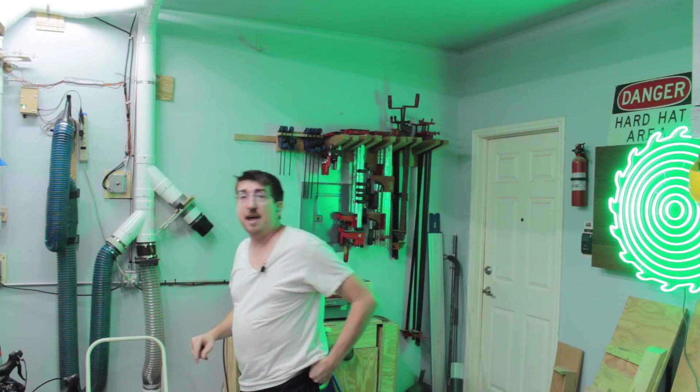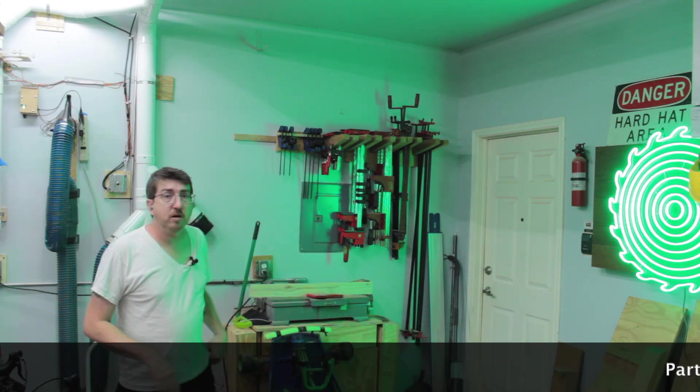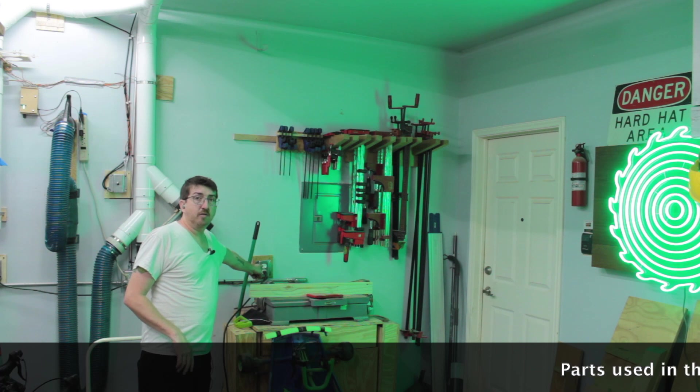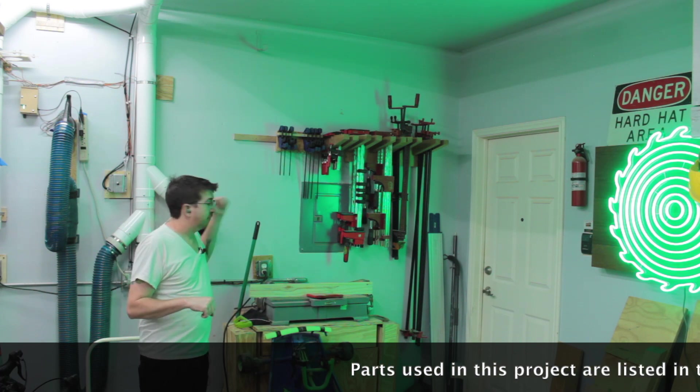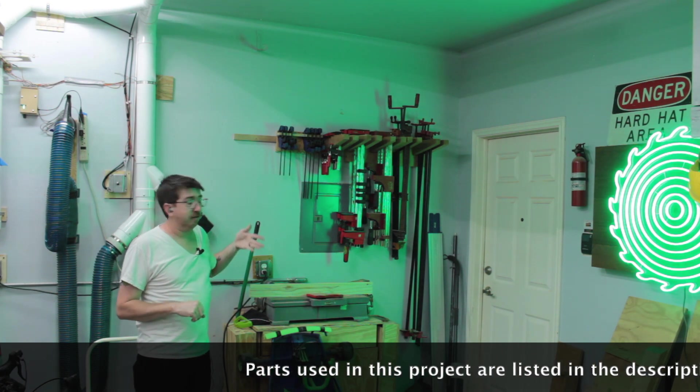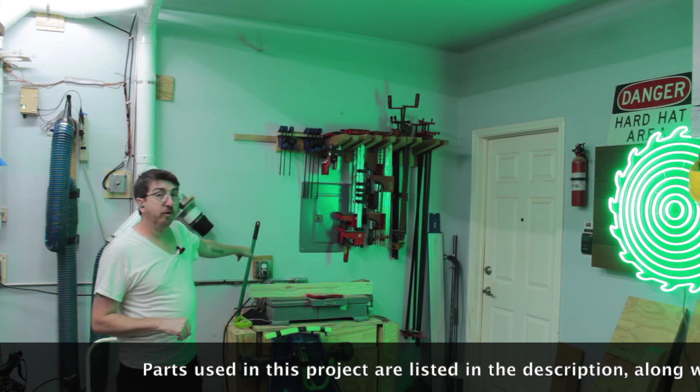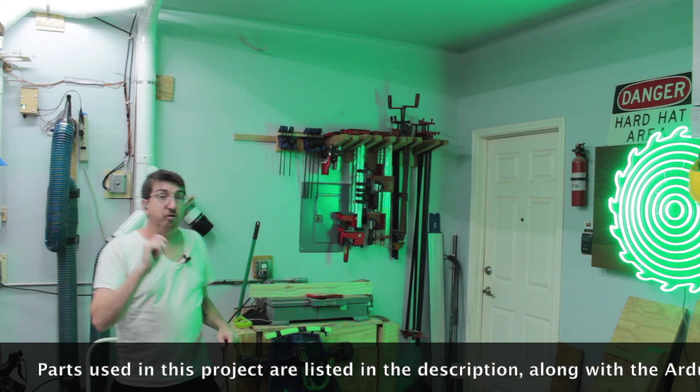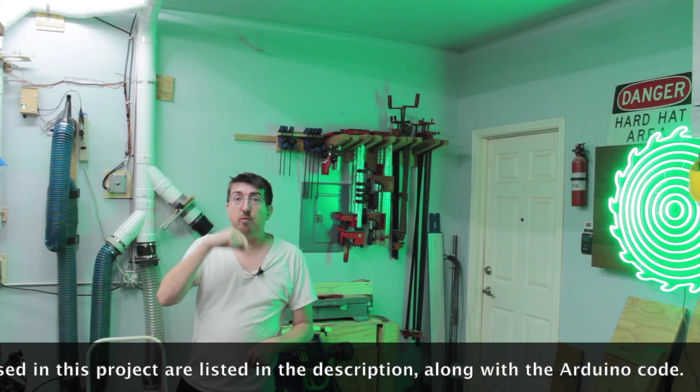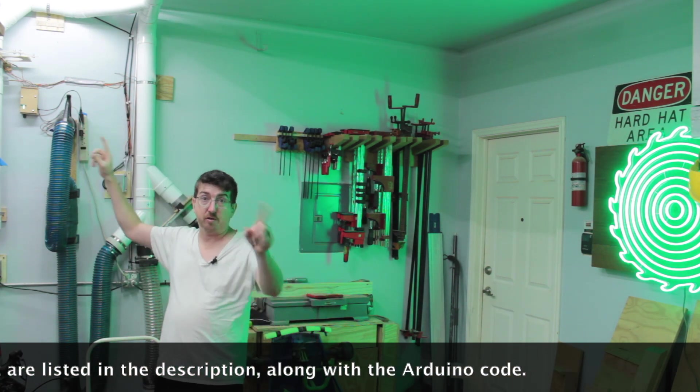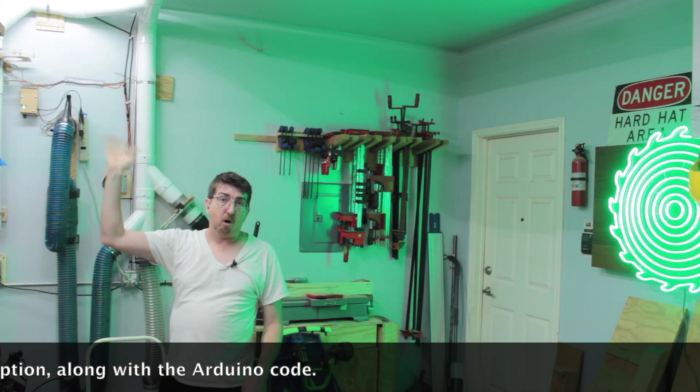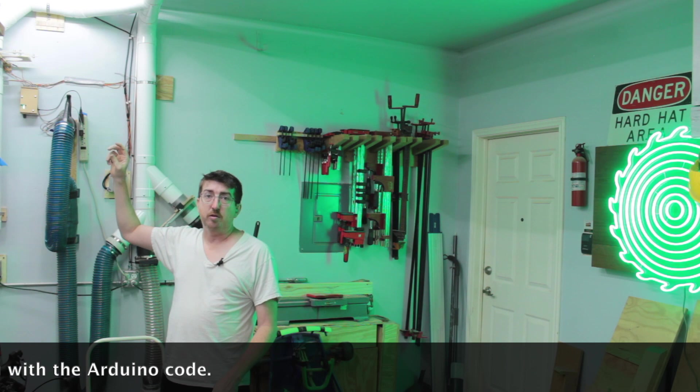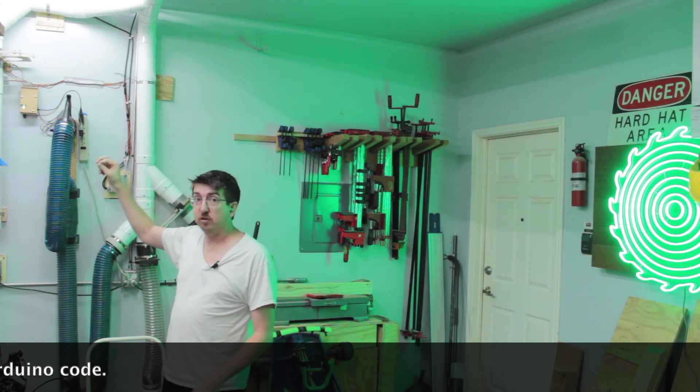So basically what I have is there is a current sensor in these outlets that I built, and I built five of them, one for each tool slash blast gate. Whenever the tool that's plugged into one of those outlets is turned on, there's a current sensor in there, which then alerts the control box on whichever side the tool is on.